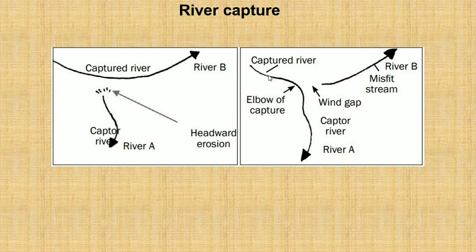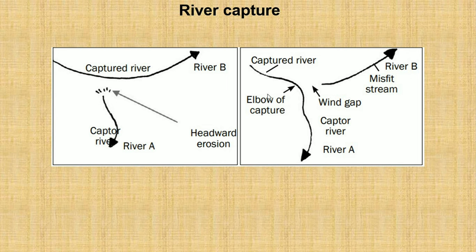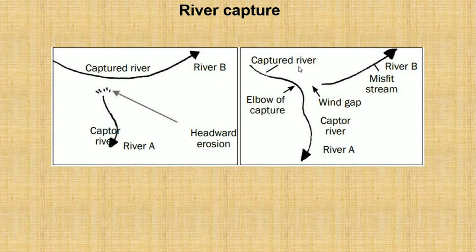In the second diagram, you will now see the captured river, which is River B, flowing inside River A. This curve or waterfall is called the elbow of capture. As the waters of River B have joined River A, there will be a gap left, and we call that a wind gap. River A will be the capture stream, whereas River B will be the captured stream or captured river.